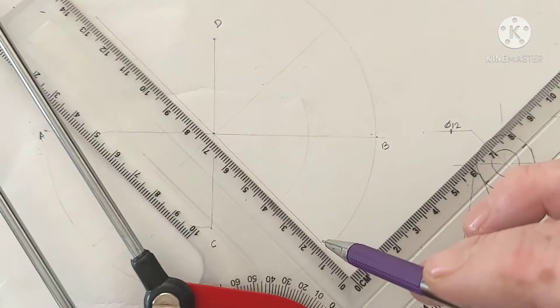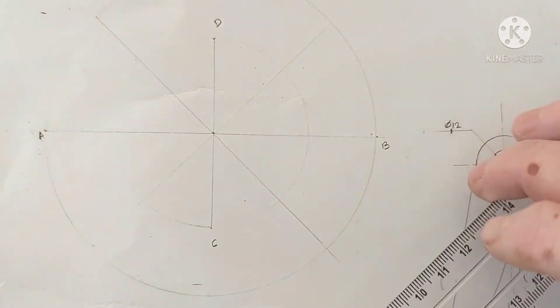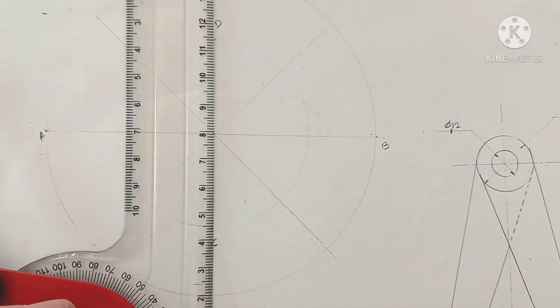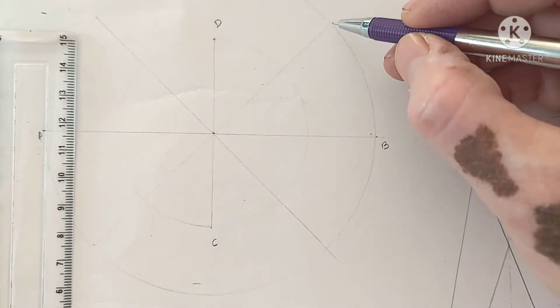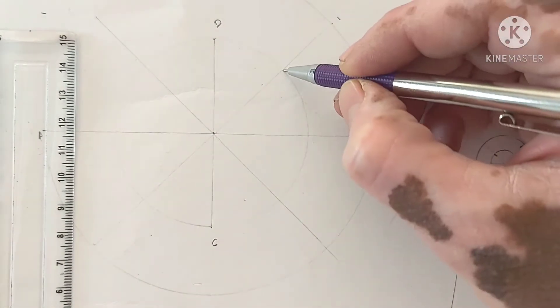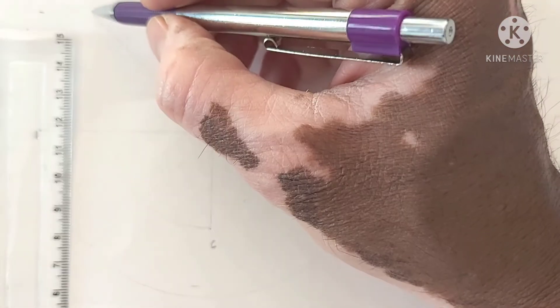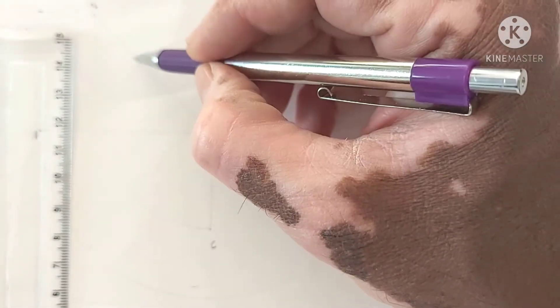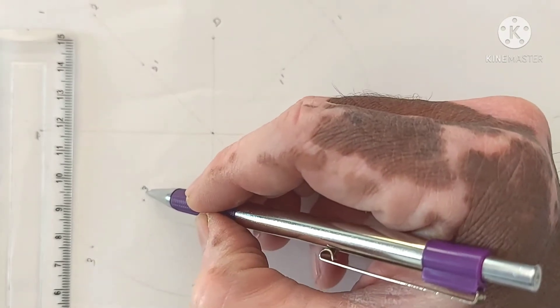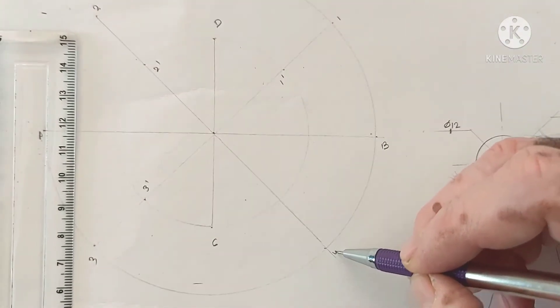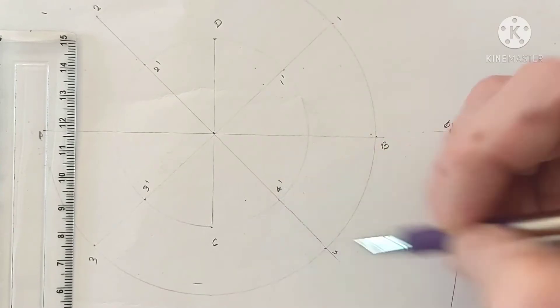Since we are constructing an ellipse, these lines will be faint. Then this is 1, suppose this is 1 dash, where this intersects, suppose this is 2, this is 2 dash, this 3 and this 3 dash, this 4 and this 4 dash.